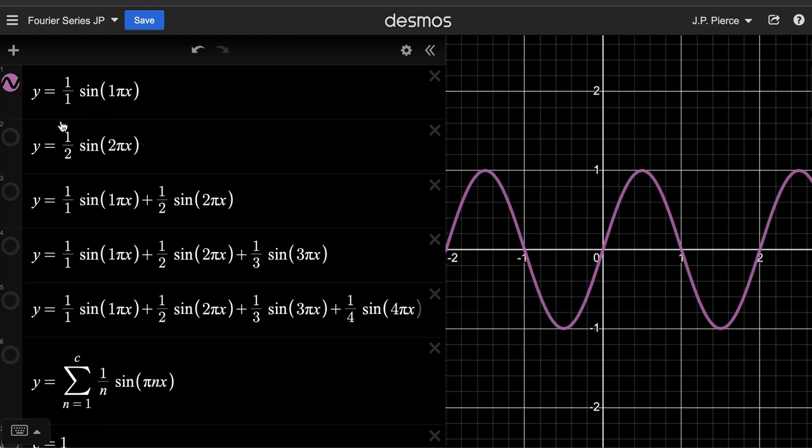And if we then graph the same function, only instead of putting 1 over 1 in front, we put 1 over 2 in front, that's going to have half the amplitude. So you see it's only half as tall.